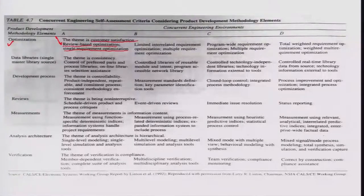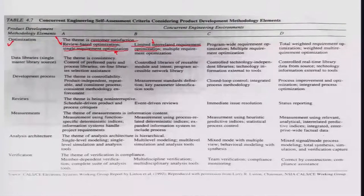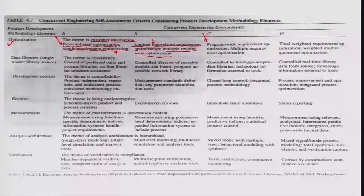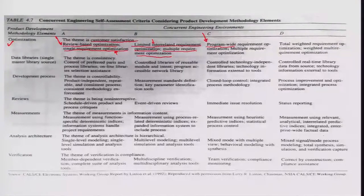There could yet be another level for limited interrelated requirement optimization. Out of the needs arising based on reviews, some kind of interrelated requirements get generated, and there are certain multiple requirements of this type which can be used for optimizing some themes or adding optimized themes to the design. We have yet another level talking about the same sort of requirement optimization not on a single section, but almost on a program-wide scale.